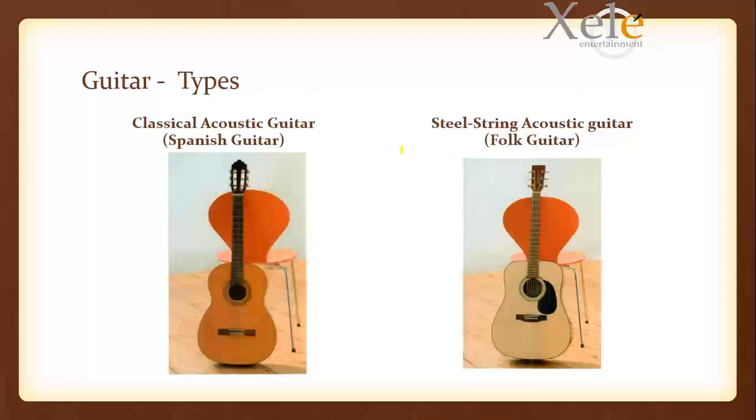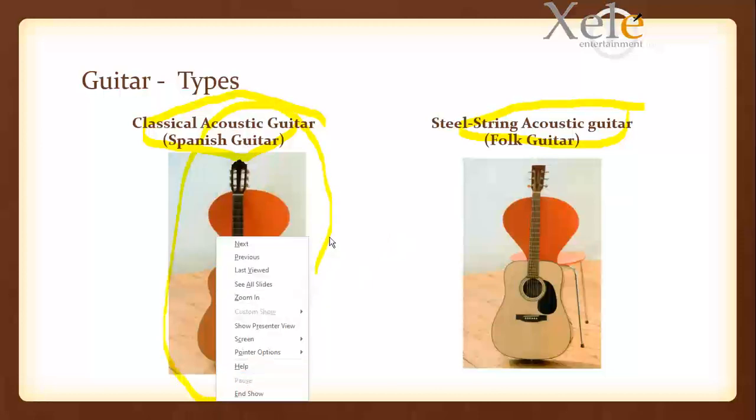The second one is the steel string acoustic guitar, also known as the folk guitar. Now you might wonder what's the difference between both of them—they look so much alike. The difference really is in the headstock. First of all, this one has nylon strings, almost as though the strings are made out of rubber.